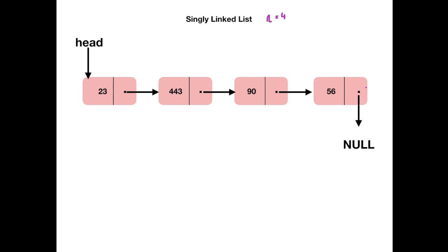To search a key, let's say 90, we start with the first node. If we do not find the value, then using the link we move to the next node and do the process until we find the value or we reach the end of the list.